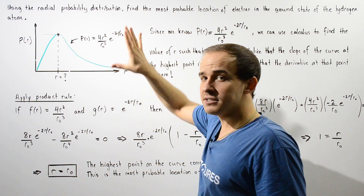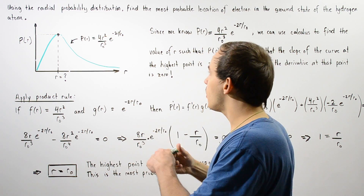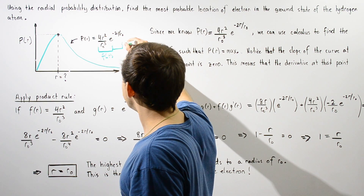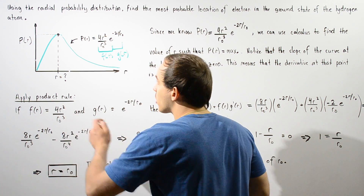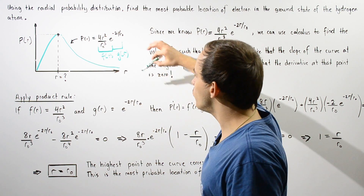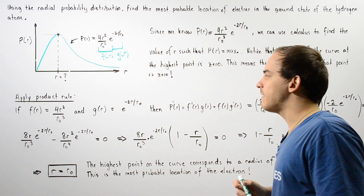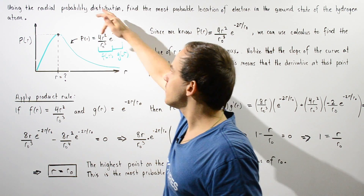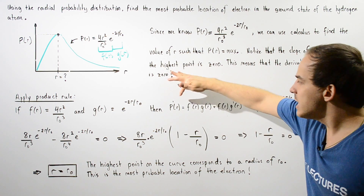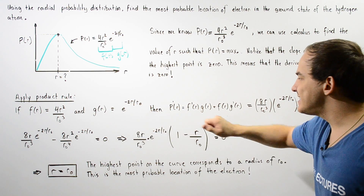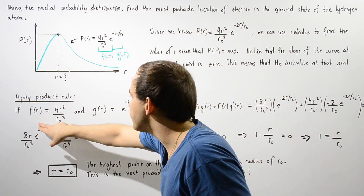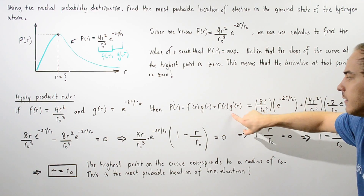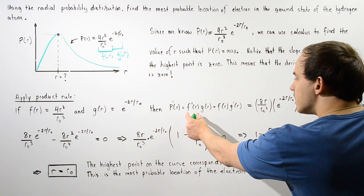This equation consists of two different functions. Let f(r) equal 4r² divided by r₀³, and let g(r) equal e to the negative 2r divided by r₀. We can apply the product rule to calculate the derivative of P(r): the derivative of P equals the derivative of f multiplied by g(r), plus f(r) multiplied by the derivative of g with respect to r.